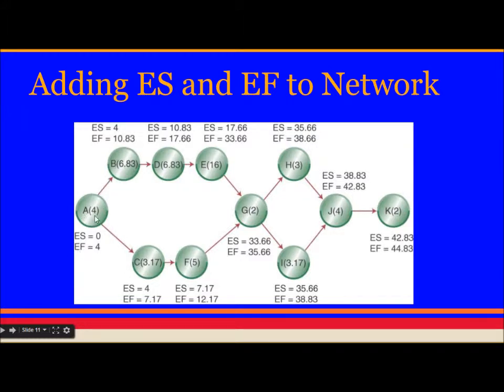For example, I will explain a bit here. For B, activity B, early start will be when A finishes. A finishes at 4. So early start will be 4. And early finish will be early start plus the duration of B. So 4 plus 6.83 will give early finish for B. So it will be 10.83. Similarly, you can do it for all the nodes.